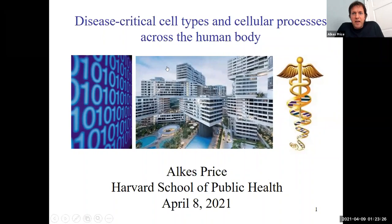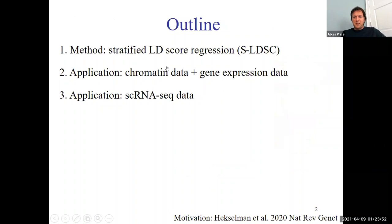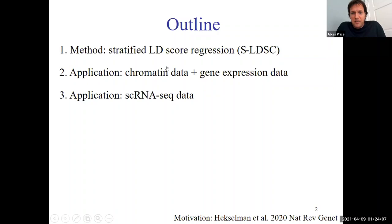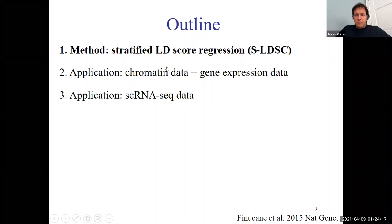Good afternoon, everybody. I'm Alkis Price from the Harvard School of Public Health. The title of my presentation is 'Disease Critical Cell Types and Cellular Processes Across the Human Body,' which makes use of a tool called stratified LD score regression. I'm going to start with a methods piece rather than a biological motivation piece, but if you'd like the biological motivation for why it would be useful to learn about disease critical cell types across the human body, you can find that in a review paper. The most pertinent reference for stratified LD score regression is Finucane et al. 2015.